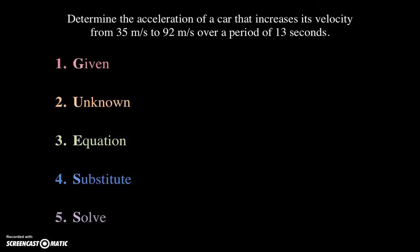So let's take a look at how these five steps apply to this particular problem. First, what is given in the problem? Well, this problem gives you a couple of velocities and a time: 35 meters per second, 92 meters per second, and 13 seconds. So we can identify those using these variables, V1, V2, and delta T. So the first velocity is 35 meters per second, the second velocity is 92 meters per second, and the change in time is 13 seconds.